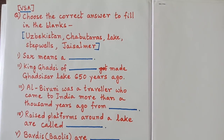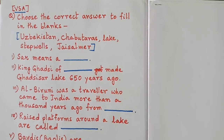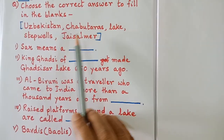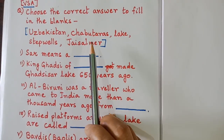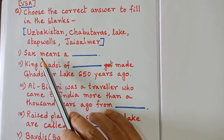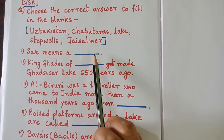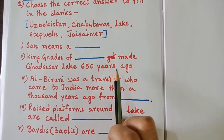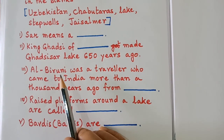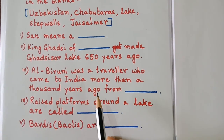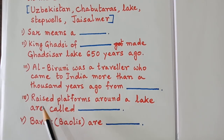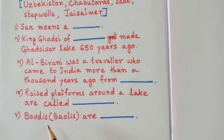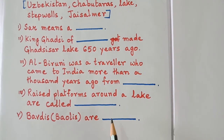Now fill in the blanks — choose the correct answer from the box. The words given are: Uzbekistan, Jaipur, Lake, Stepwells, and Jaisalmer. King Gharsi made Gharsisar Lake 650 years ago. Al-Biruni was a traveler who came to India more than a thousand years ago from the place you have to write. Raised platforms around a lake are called what — you will find the answer from the box. Bawris or Bawlis are what — you have to write it here.